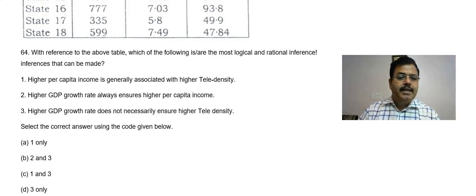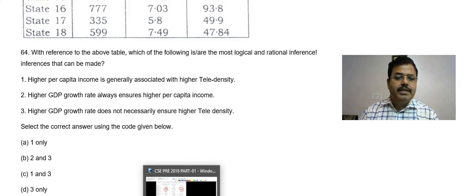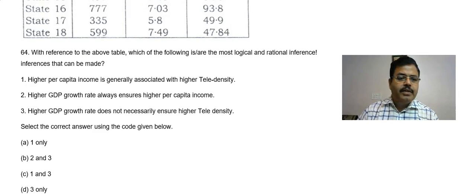Higher GDP growth rate always ensures higher per capita income. Higher GDP growth is there, but higher per capita income is not there. So that is not associated. This one is also wrong.